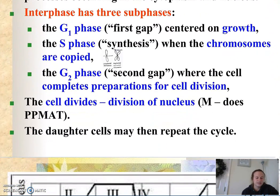Here are the three subphases: gap phase or G1 phase is centered around growth. During the S phase you've got replication going on where your DNA is being copied to give you exact matches. In the gap two phase or the second gap, that's when the cell completes preparations for cell division.